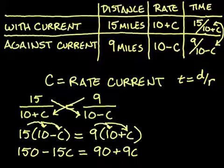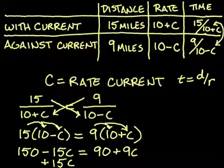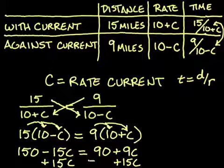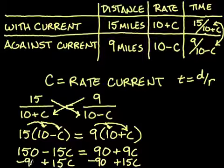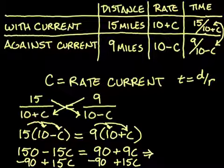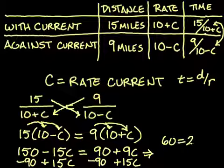To solve this, we want all of the variables on one side, the constants on the other. So I'm going to go ahead and add 15C to both sides. And I'm going to subtract 90 from both sides. Simplifying this out and combining the like terms, I'm going to end up with the equation 60 is equal to 24C.